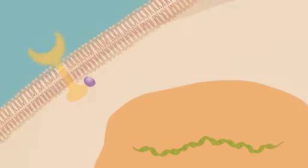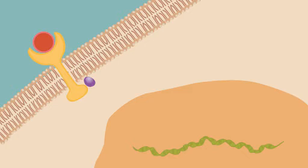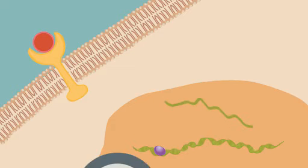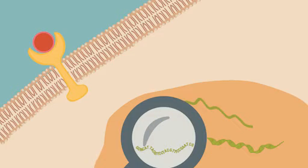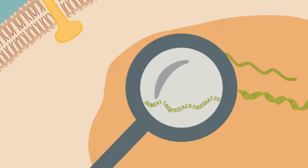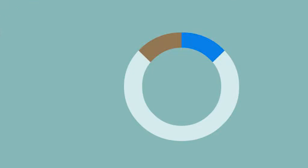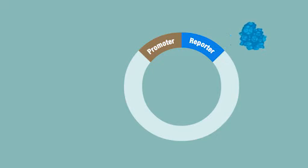Reporter gene assays are used to study signaling pathways, gene regulation, and the structure of regulatory elements. In its simplest form, a reporter assay consists of a regulatory element of interest cloned into a vector with a reporter gene. The reporter gene encodes a protein with an easily measurable activity.